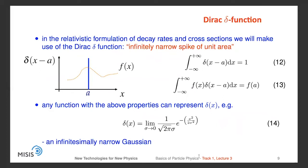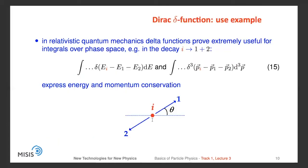Now in the relativistic formulation of decay rates and cross-sections, we make use of the Dirac delta function. This is basically an infinitely narrow spike of unit area — a function equal to zero everywhere except one point where it equals infinity. The formal definition is that the integral of the delta function from minus infinity to plus infinity equals unity. If we have a delta function multiplied by some function f, the integral equals the value of f at point a. Any function with these two properties can represent a delta function, such as an infinitesimally narrow Gaussian.